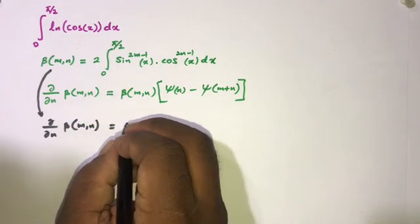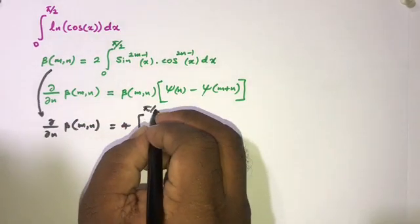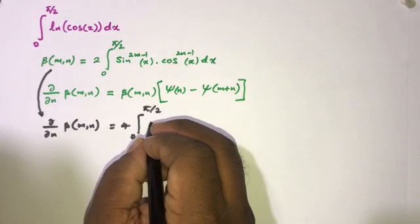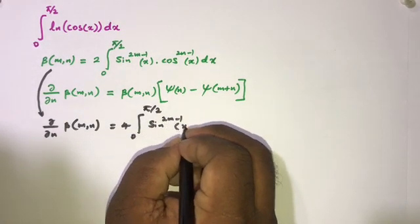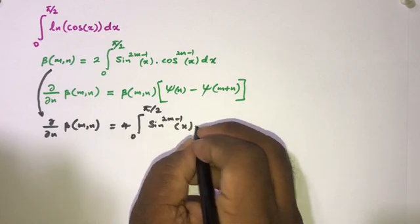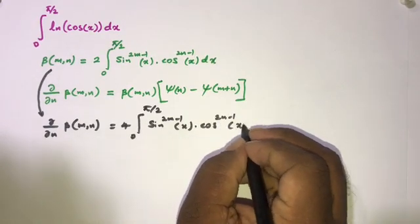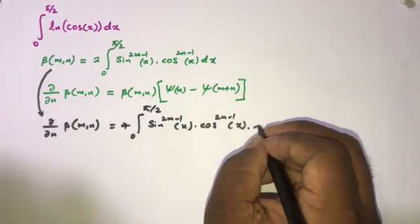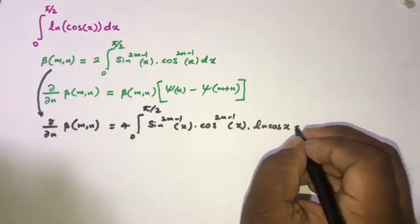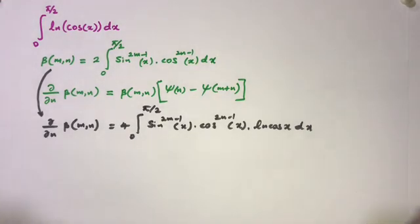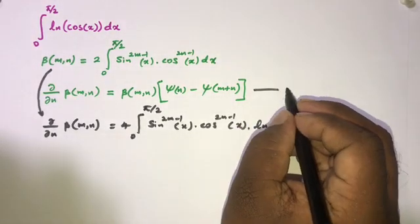Now if we differentiate this beta function definition with respect to n, we can write the derivative of β(m, n) is equal to 2 times the integral from 0 to π/2 of sine to the (2m−1) of x times cosine to the (2n−1) of x times natural log of cosine of x dx.